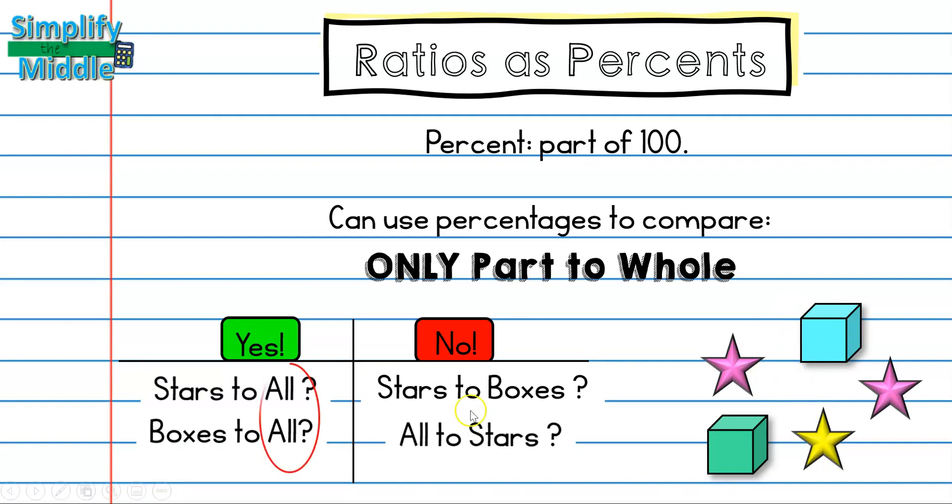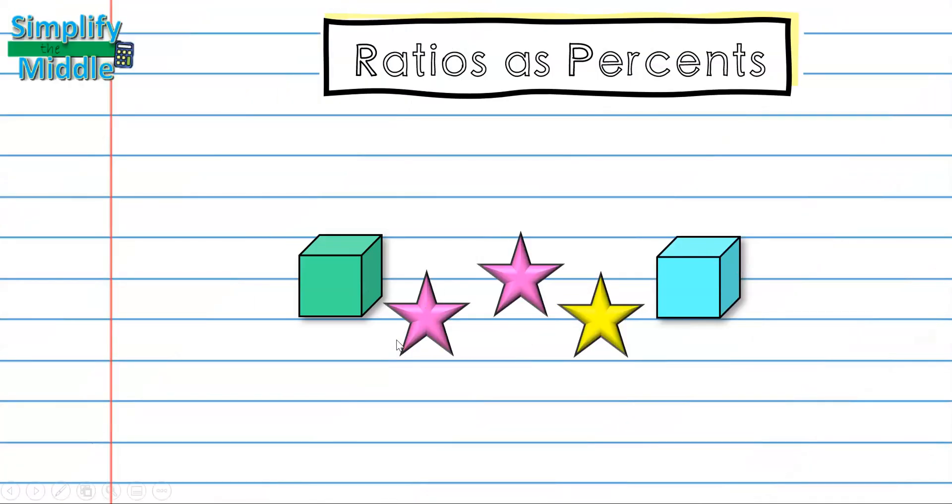Notice that in my yes column, it doesn't matter what my part is. My whole is always going to be written second, and here usually we use all to represent our whole.